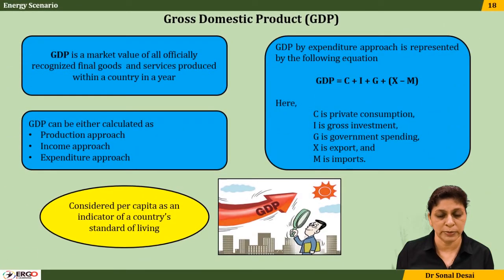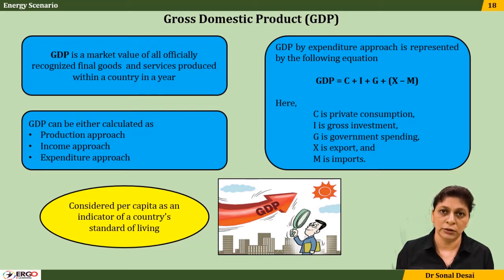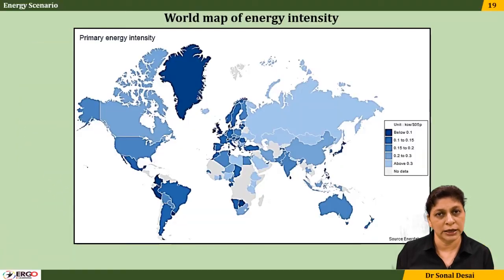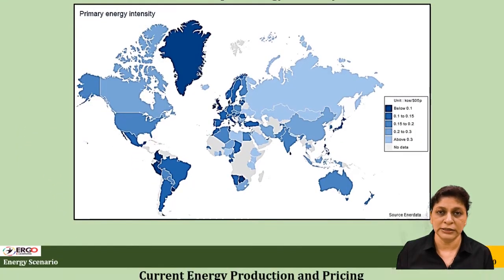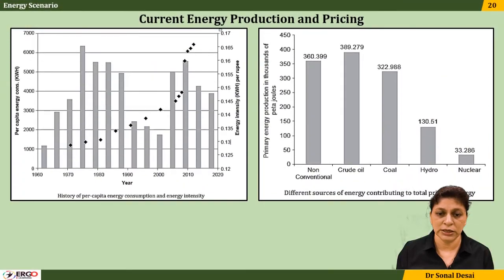What GDP is and its role in a country's development, and how GDP is calculated, is shown in the slides. A world map of energy intensity is also discussed, followed by current energy production and pricing for India.